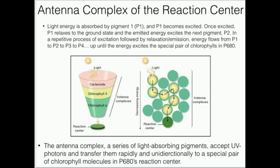So light strikes this pigment right here. Excitation and relaxation excites the electron here. This excited electron relaxes and excites the electron here. This excited electron relaxes and excites the next one here. This excited electron relaxes and excites the next one, and so on and so forth. Later on we're going to have unidirectional electron flow; here we have unidirectional energy flow.